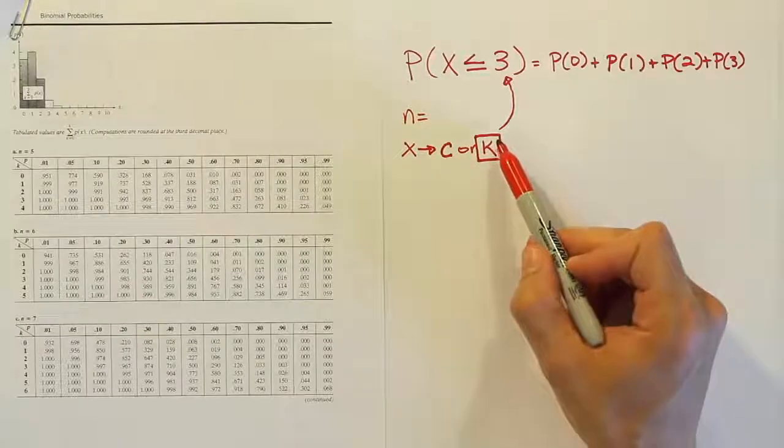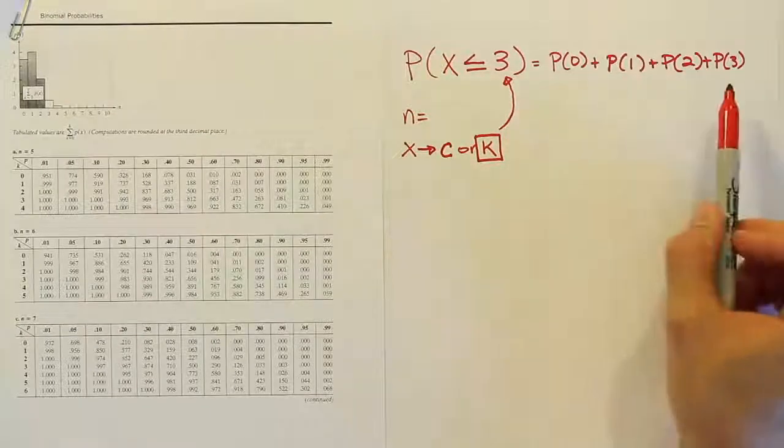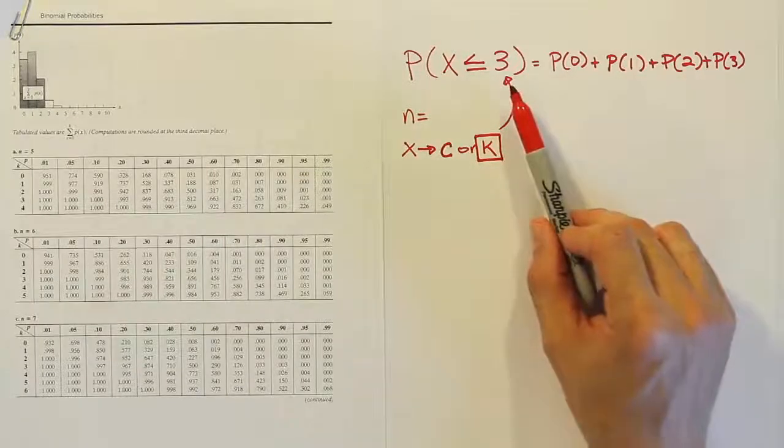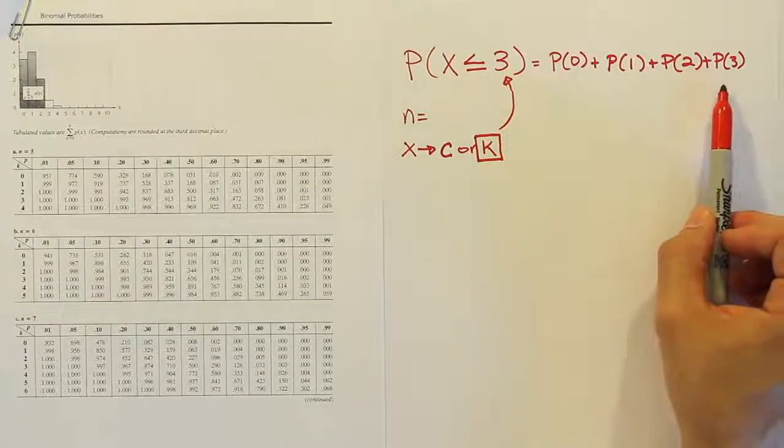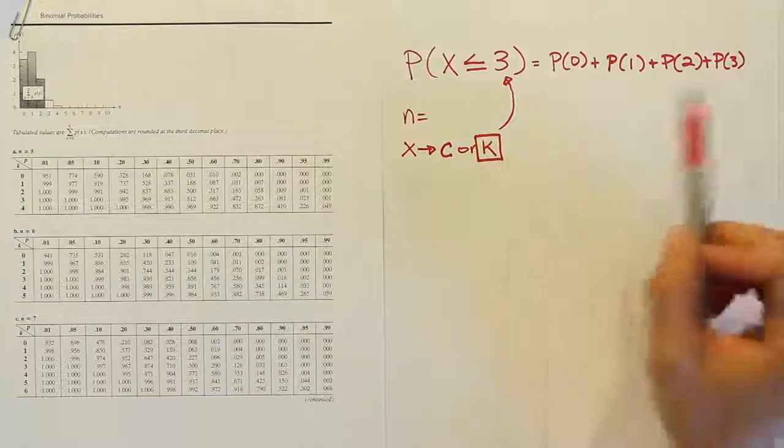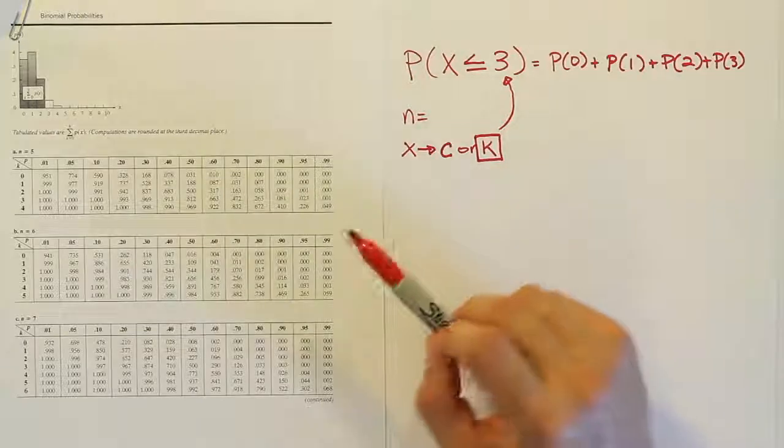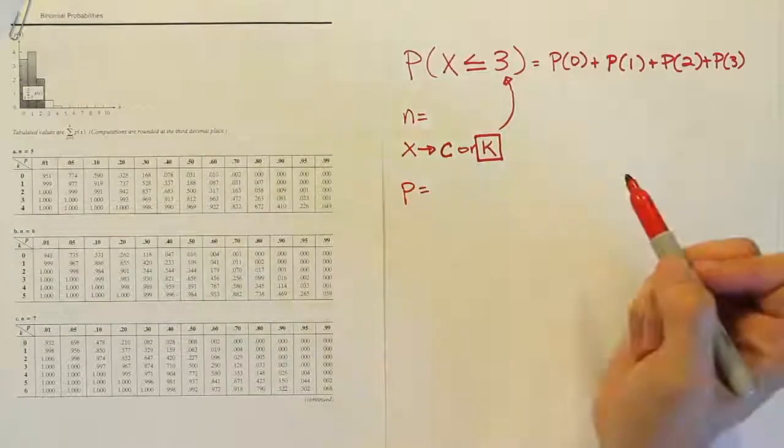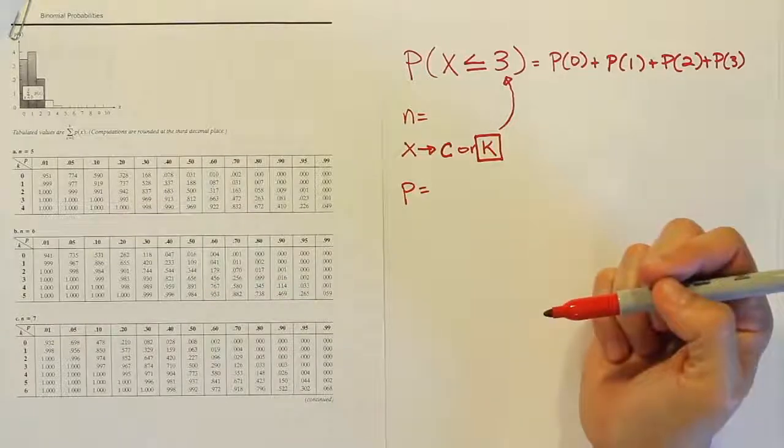And what that means is that when you look at our table, if k is 3, we're going to take the probability that x is 3, 2, 1, and 0 and add them all up. What would it be if I let k be equal to 4? It would be 4, 3, 2, 1, 0, add them all up. And then finally, you're going to need p. You're going to need to know the probability of success.